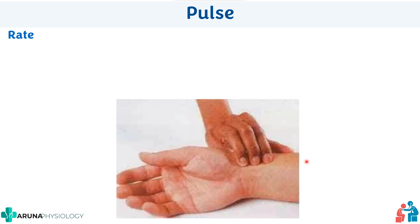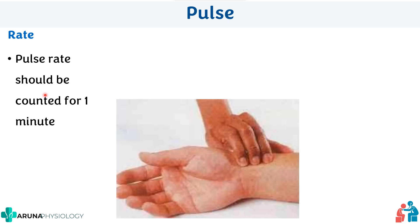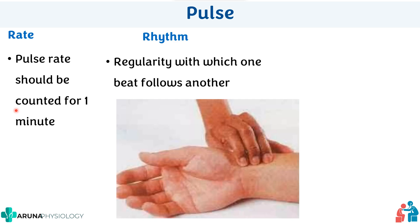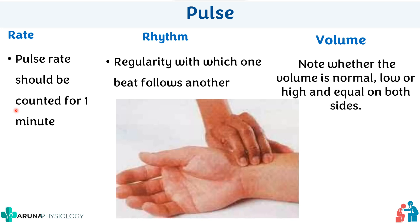To find the rate, the pulse should be counted for one full minute — remember to take your watch during examination. Then check the rhythm: whether the beat follows another regularly, i.e., whether the pulse is regular or irregular. Then note the volume — whether it is low, high, or equal — and whether it is equal on both sides. Rate, rhythm, and volume are assessed by palpating the radial artery.